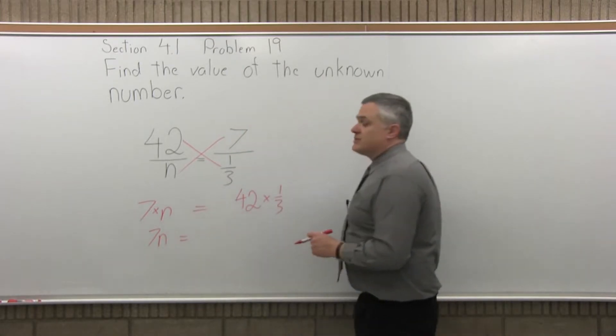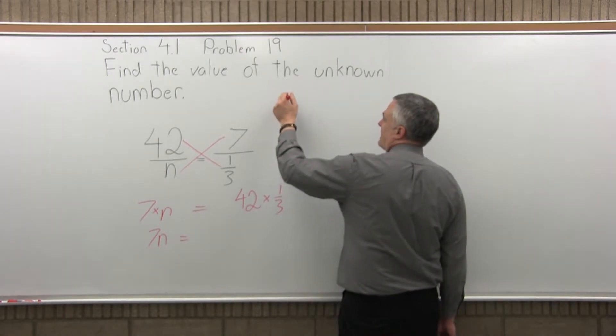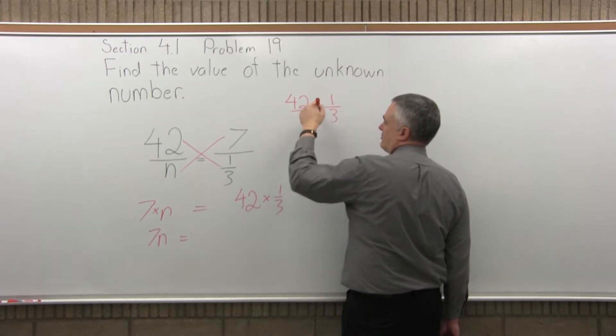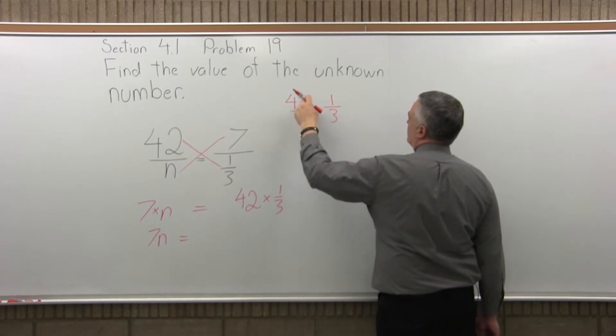42 times one-third. Because of the fraction, this seems tougher. It's not too bad. Off to the side, we'll make it 42 over 1 times 1 over 3, so we have a numerator and denominator for both. It does reduce, if you happen to notice.